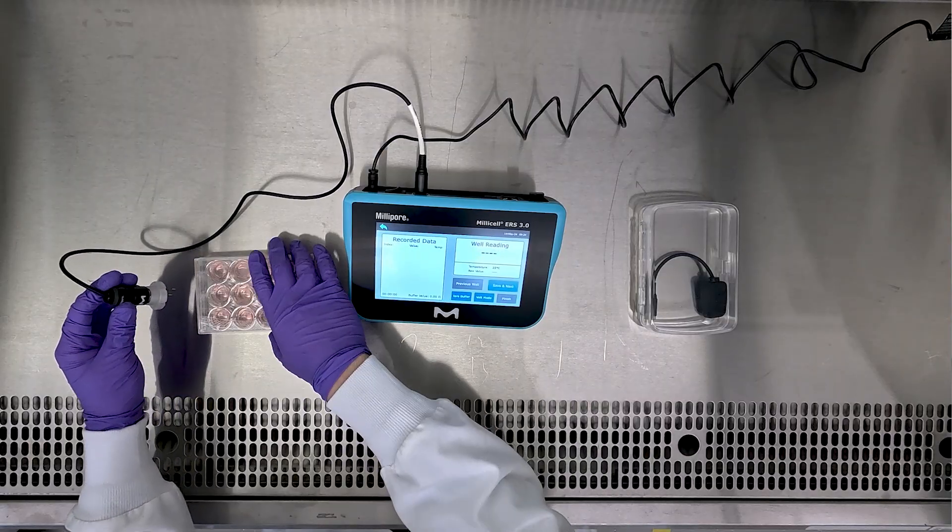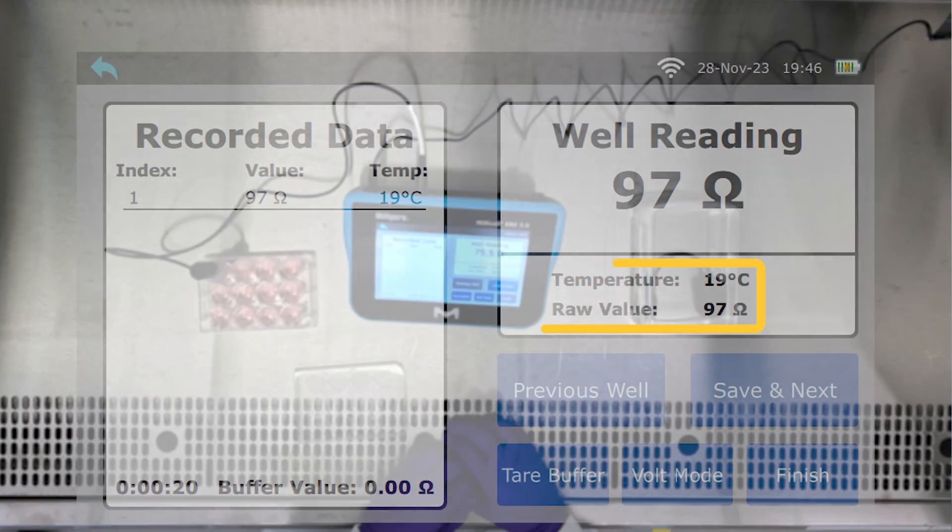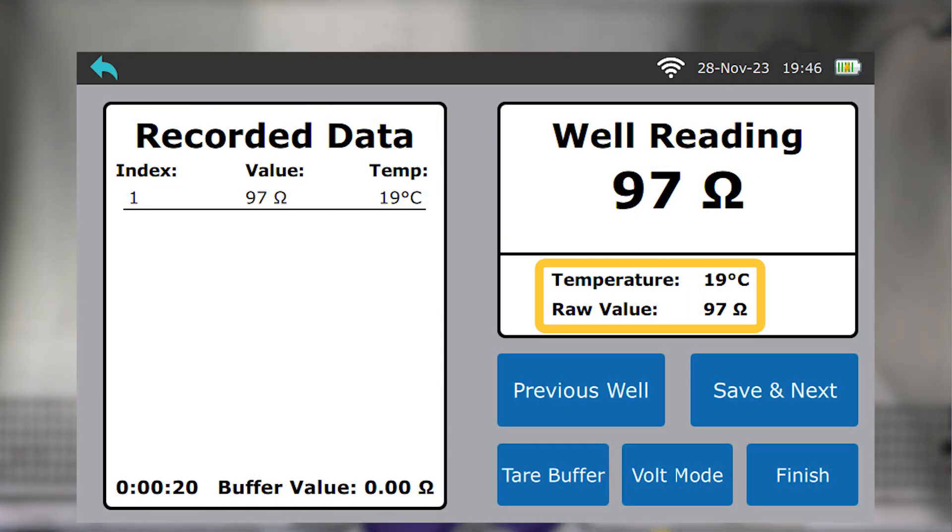Use quick capture mode for instantaneous tear measurements. This mode measures temperature and resistance at the same time, with the option to tear a background or buffer value and save measurements with the save and next button.